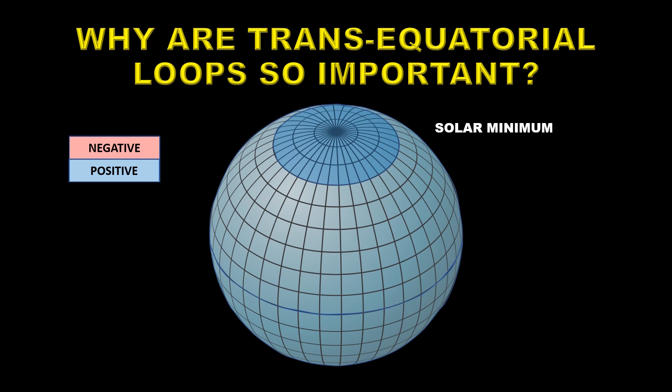And as new sunspots build up the same process will take over slowly destroying them until you get to the next maximum. So these transequatorial magnetic fields are very important in setting up this new cycle.